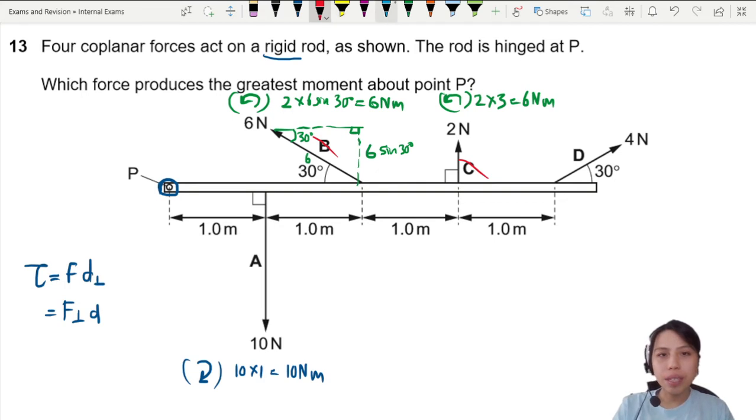D. Last one. D will also try to rotate the rod anti-clockwise. But we need to resolve the force again. Let's resolve the force here. This is going to be 30 degrees. What's the perpendicular force?